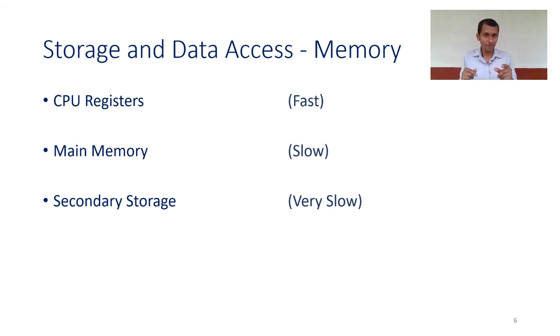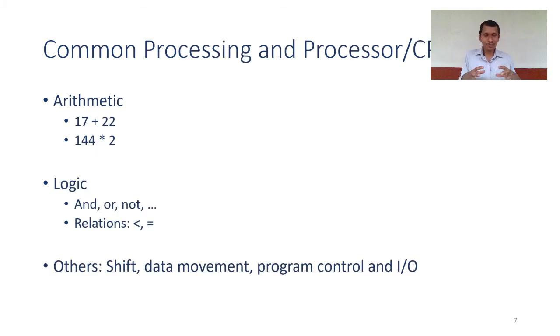Processing is going to happen in the processor, but what operations will the processor do? The processor is not going to do anything extraordinary — only very small operations, such as adding two numbers, subtracting, dividing, multiplying, or logic operations like AND, OR, and NOT (complementing). There are also bit-level operations like shifting, and data transfer operations: transferring to main memory, retrieving data from main memory, taking input from an input device, or giving some output.